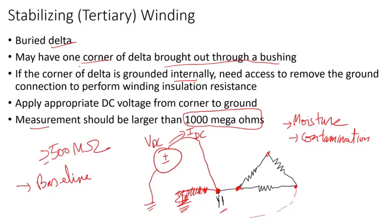To avoid all these issues, all you need to do is specify that one corner of the stabilizing winding or buried delta be brought out through a bushing, then ground that bushing. All you need to do is remove that jumper wire or bus bar, and now you can perform the test easily without opening the cover or draining oil. You don't have to do anything - just remove that conductor that connects the corner bushing to ground.